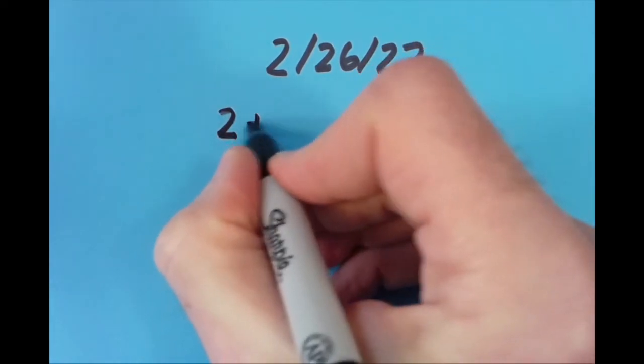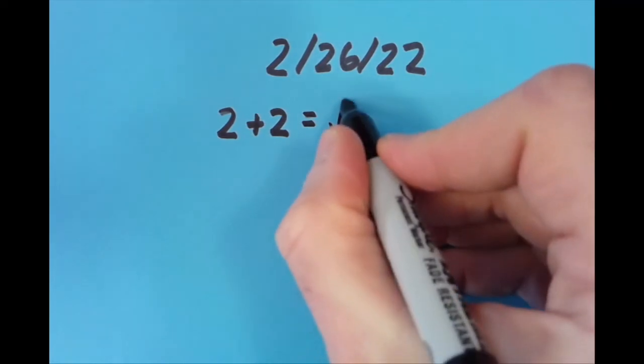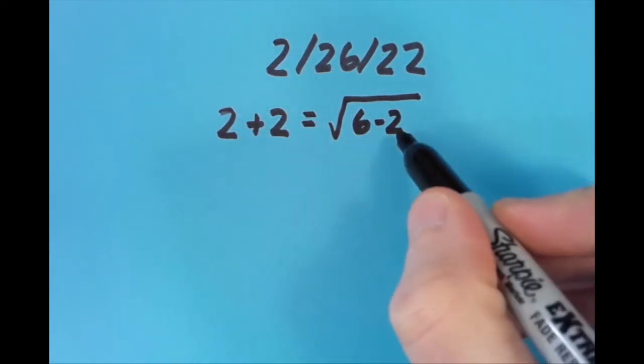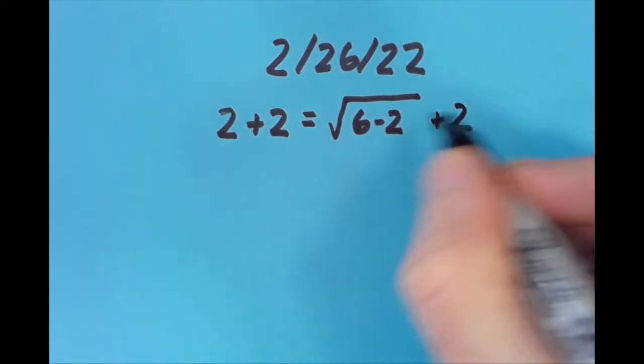What I did was I said 2 plus 2, which is 4, equals the square root of 6 minus 2. So 6 minus 2 is 4, the square root of 4 is 2, and 2 plus 2 also gives me 4. That's what I did. Then I said, well, there's got to be some other ways to do it.